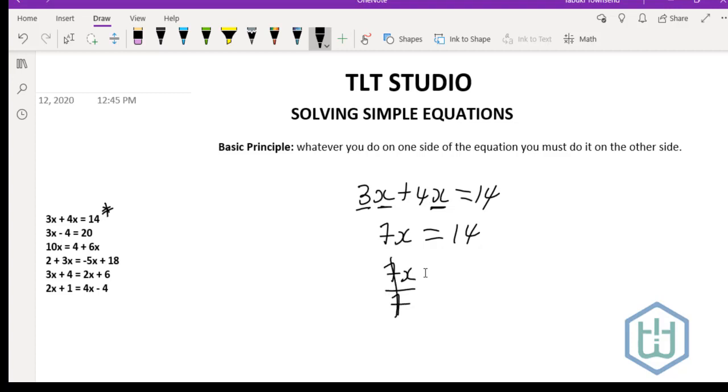Whatever we do on the left hand side, we're going to do it on the right hand side. So we divide this side of the equation by 7, therefore we need to do it to the right hand side of the equation. 7 into 7 is 1, same to this side, therefore x equals 2.